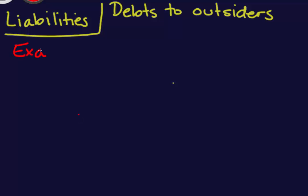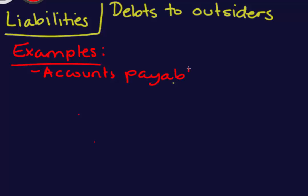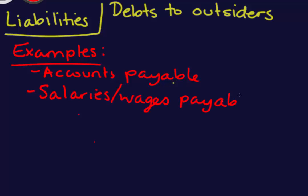Let's talk about a few examples of liabilities. The most common on a company's financial statements is accounts payable, which comes about when you buy something from another company and tell them you'll pay later. We can also have other types of payables such as salaries or wages payable, when you owe your employees for work done but haven't yet paid them. Another common liability is a loan from a bank, or a mortgage on a building the company is buying.